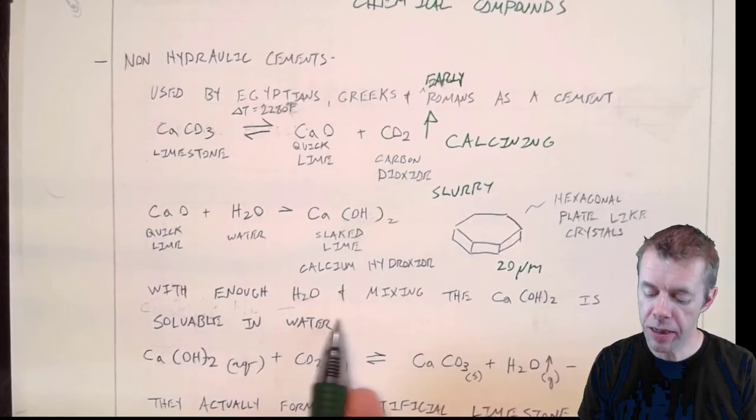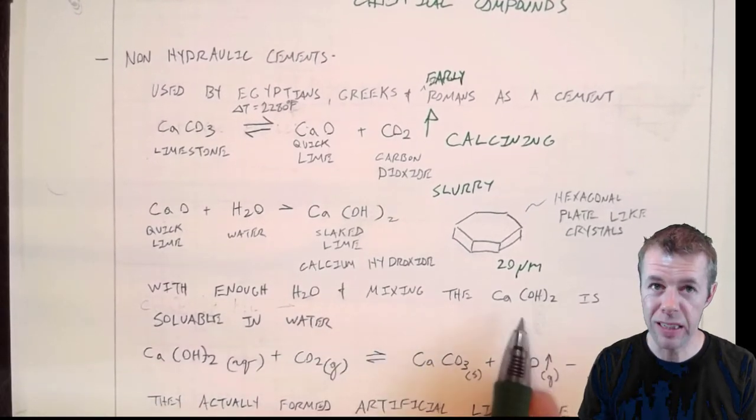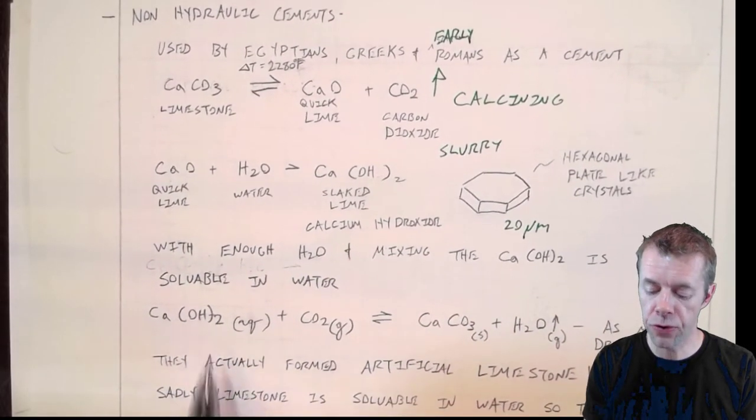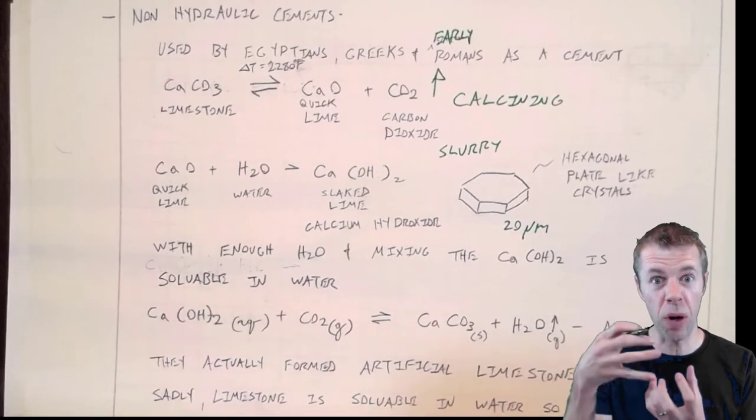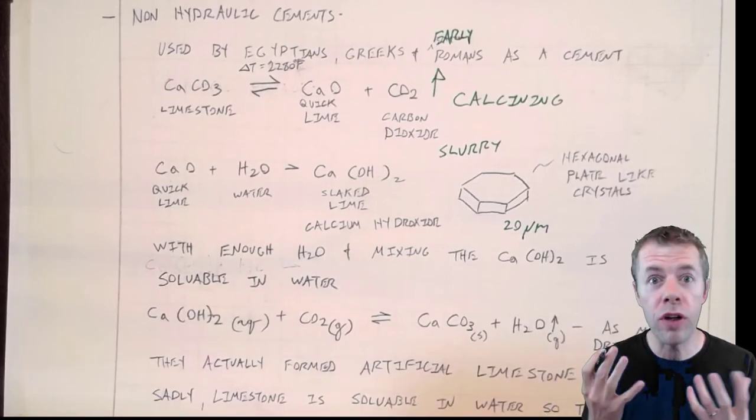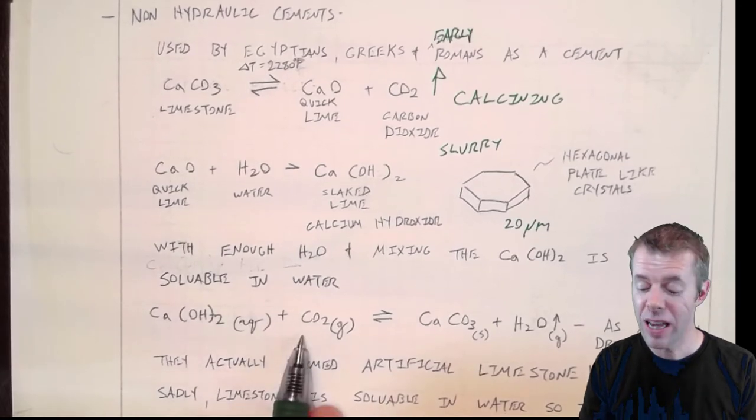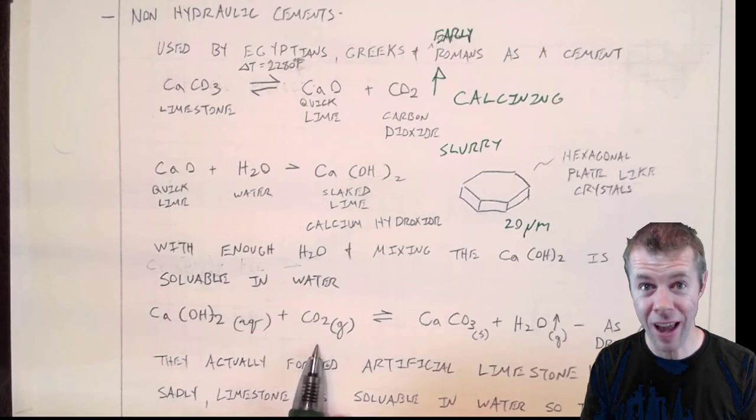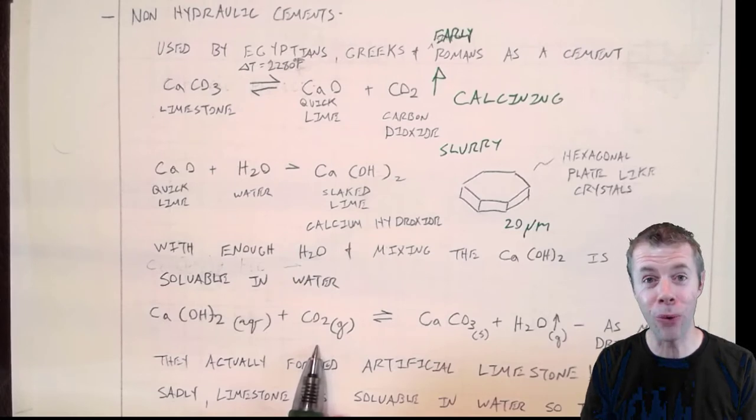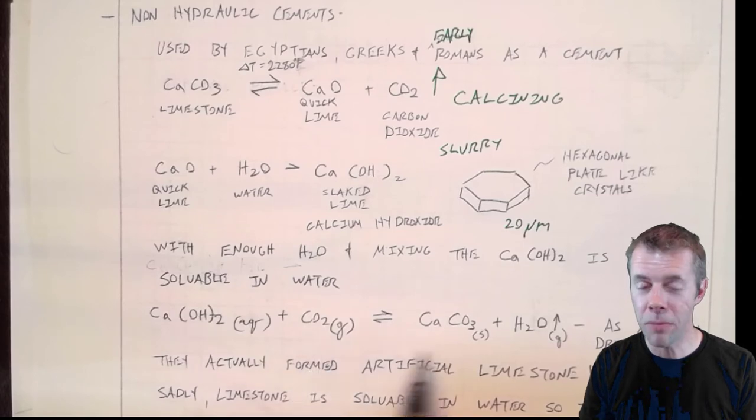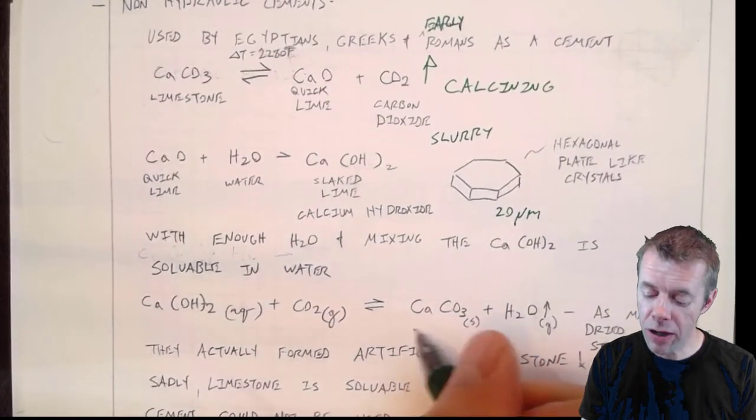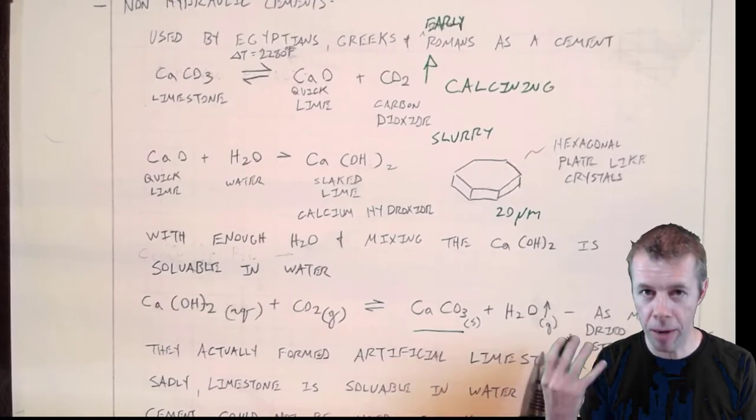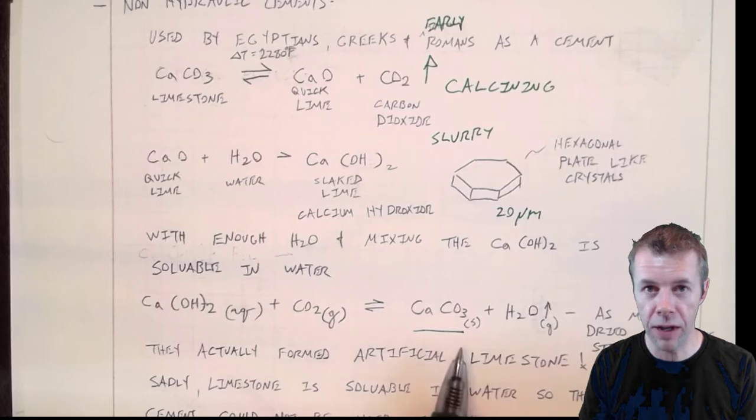But, with enough water and mixing, this calcium hydroxide is actually soluble in water. So, you get this slurry. You make this slurry of material, and you glue stuff together, like bricks, or stones, or whatever you want. And then, once it sits out, it absorbs carbon dioxide from the atmosphere. It absorbs it. And what does it make? It makes calcium carbonate. It makes what you started out with. And water.